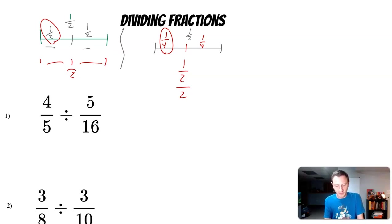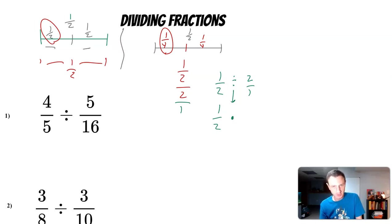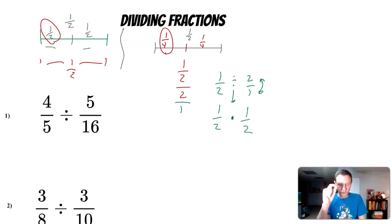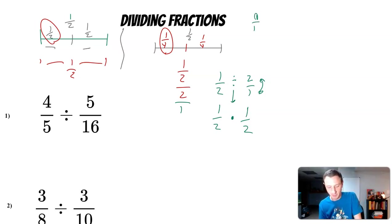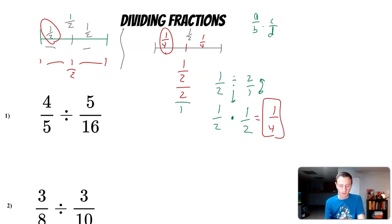How do we get from one half divided by two to equal one fourth? We write it as one half divided by two over one. When dividing fractions, we take the first fraction, change division to multiplication, and take the reciprocal of the second fraction. So this becomes one half times one half. Now we have a multiplication question and the same multiplication properties apply.